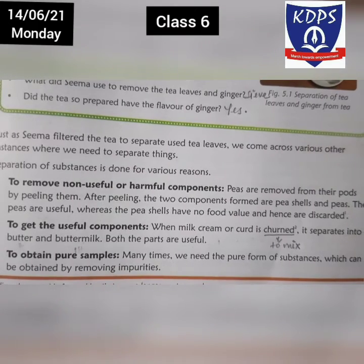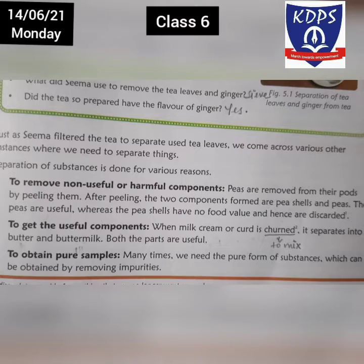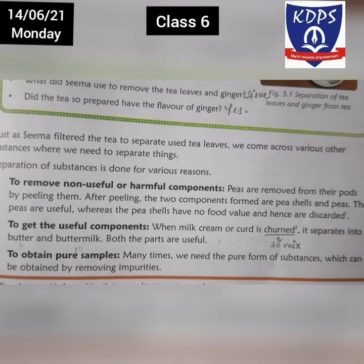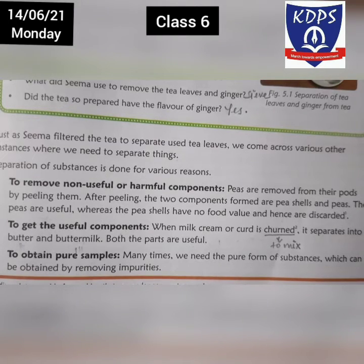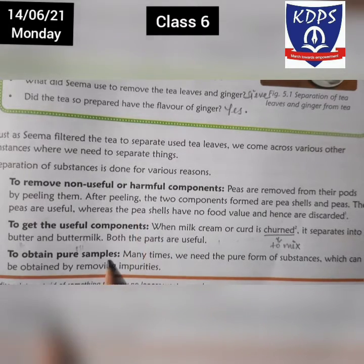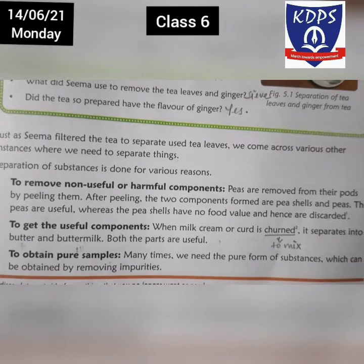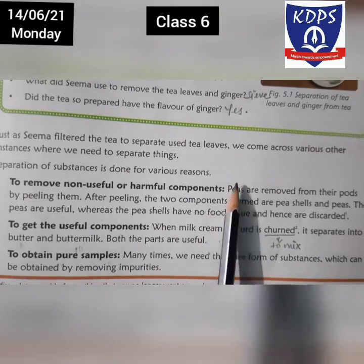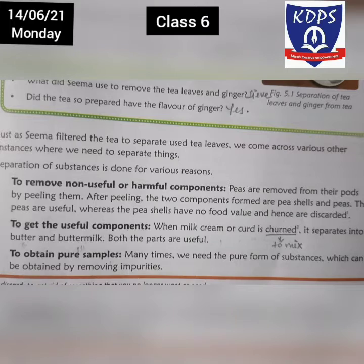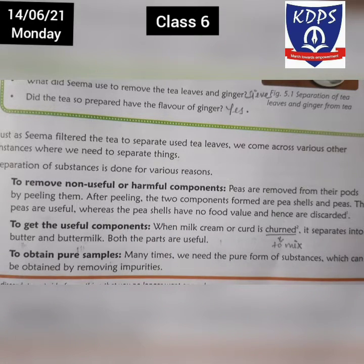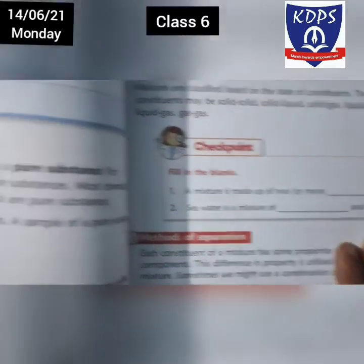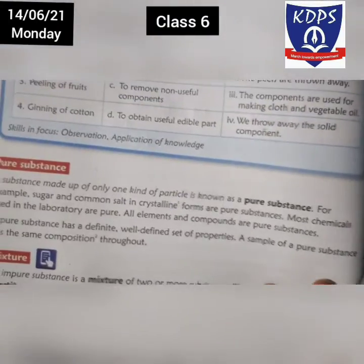So in this case, hamein separation karne ke baad do components mile, but woh dono components hamare useful hain. First case mein humne separate kiya aur usme ek substance useful nahi tha toh humne use discard kar diya. Second reason mein dono substances useful the. Ab hai hamara third reason — to obtain pure samples.